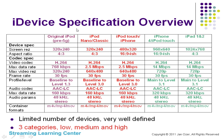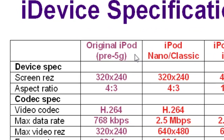If you care about everybody, looking at the extreme left of this chart, the original iPod — pre-5th generation — we see the screen resolution, aspect ratio, and codec. The original iPod supports H.264, but at a maximum data rate of 768 kilobits per second, and even more importantly, a maximum video resolution of 320 by 240. So if you produce an H.264 file at a resolution larger than 320 by 240, it's probably not going to play on the oldest iPods.